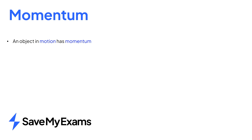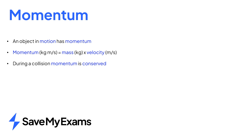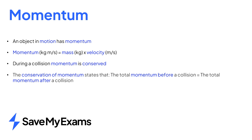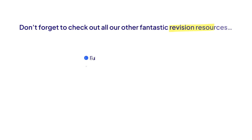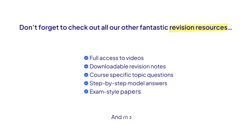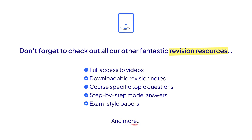In summary, an object in motion has momentum. The equation for momentum is: momentum in kilograms meters per second is equal to mass in kilograms times velocity in meters per second. During a collision, momentum is conserved. The conservation of momentum states the total momentum before a collision is equal to the total momentum after a collision. You must carefully consider the direction of motion before and after a collision. Don't forget to check out all our other fantastic revision resources here at Save My Exams.